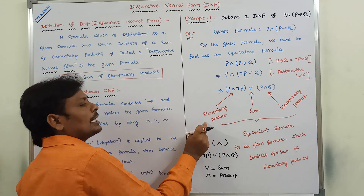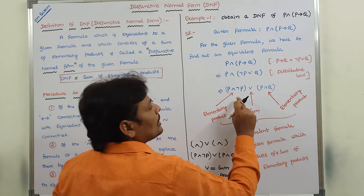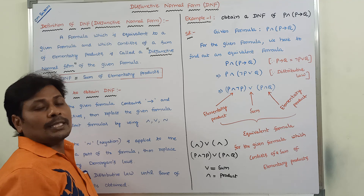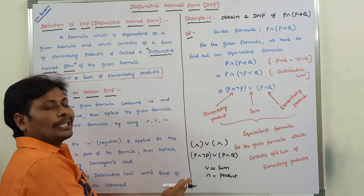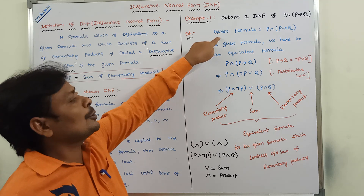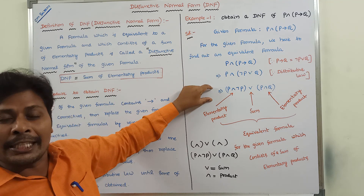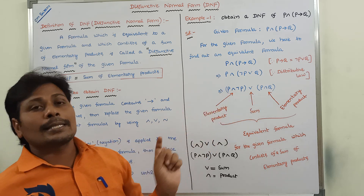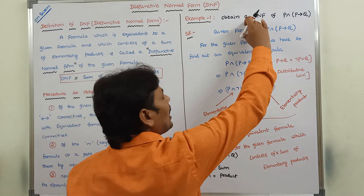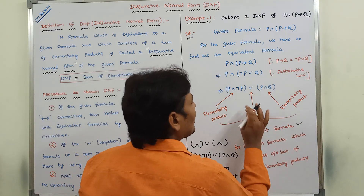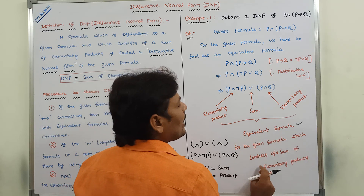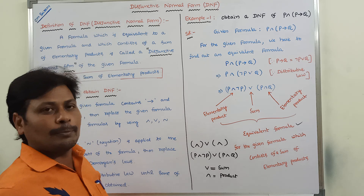So this is one elementary product and this is another elementary product. These two elementary products are combined by using sum. For the given formula, we have to find out the equivalent formula which consists of a sum of elementary products. Whenever two or more elementary products are combined by using the OR connective, then we can say that it is called as sum of elementary products.